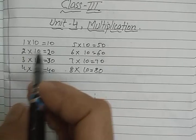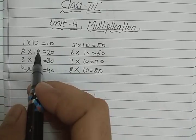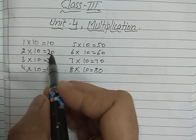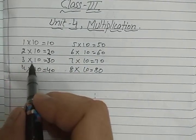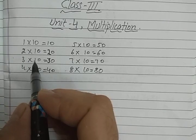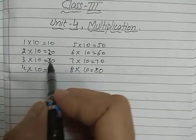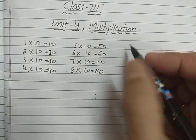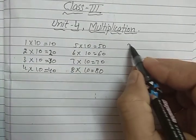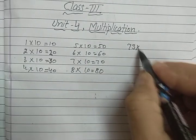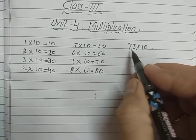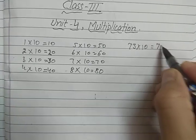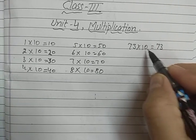For example, 2 multiplied by 10: we write 2 and then how many zeros are there in 10? One zero, so we write 0 on the right side. Then 3 multiplied by 10: we write 3 and then 1 zero on the right side. Suppose we want to multiply 73 by 10: first we write 73, and then there is 1 zero in 10, so we write one zero on the right side.